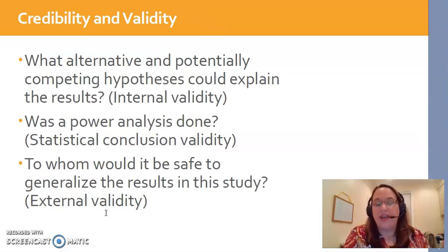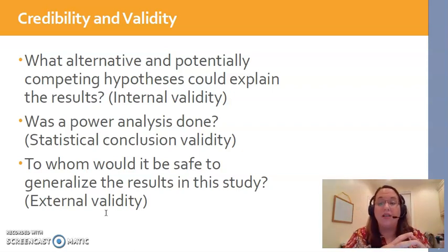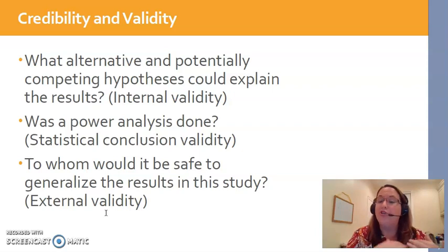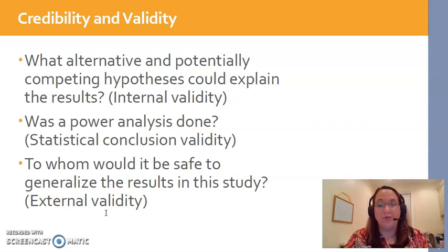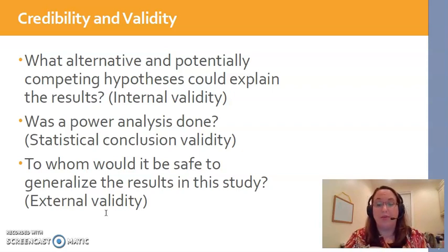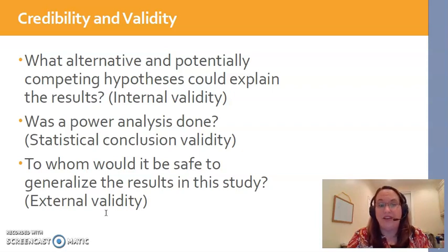Some questions you can ask yourself: For internal validity, did the independent variable cause changes to the dependent variable? Are there other possible confounding variables that could explain the results? Sometimes an outsider can easily see holes in a study that the researchers might not have seen. If weight loss is the outcome, for example, there are other things that could cause it besides the intervention — extra exercise outside of study time, weight loss supplements or pills, or a change in diet and caloric intake. Those are confounding extraneous variables.